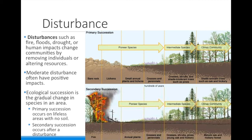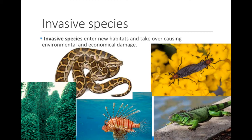Invasive species are typically species that have been moved by humans from their natural environment to a new one. When they reach the new environment, they take over existing communities. They might not have any predators, or they could be very well adapted to the new environment and their population explodes. This usually damages the native species because they are outcompeted.